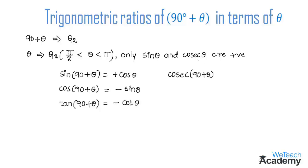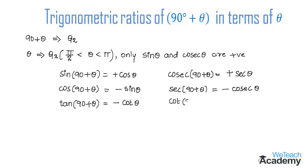For cosecant(90° + θ): since 90° + θ lies in the second quadrant where cosecant is positive, cosecant changes to secant, giving positive secant θ. Then secant(90° + θ) equals minus cosecant θ, and cot(90° + θ) equals minus tan θ.